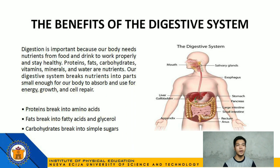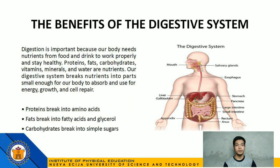The benefits of the digestive system: digestion is important because our body needs nutrients from food and drink to work properly and stay healthy. Proteins, fats, carbohydrates, vitamins, minerals, and water are nutrients. Our digestive system breaks nutrients into parts small enough for our body to absorb and use for energy, growth, and cell repair. Proteins break into amino acids, fats break into fatty acids and glycerol, and carbohydrates break into simple sugars.